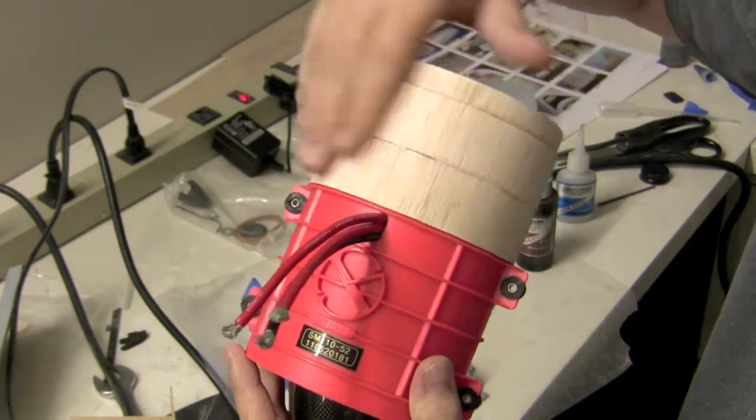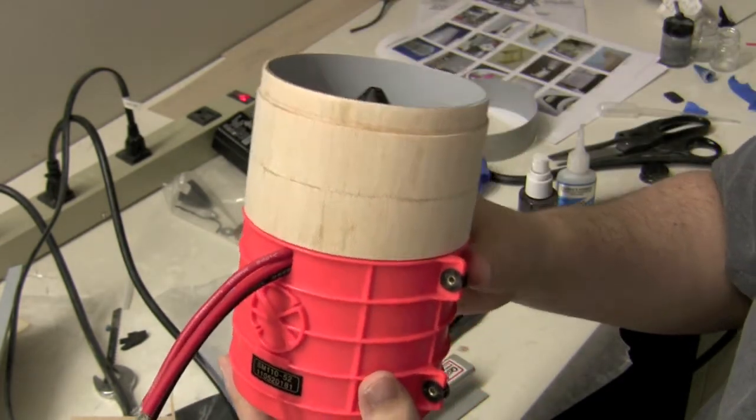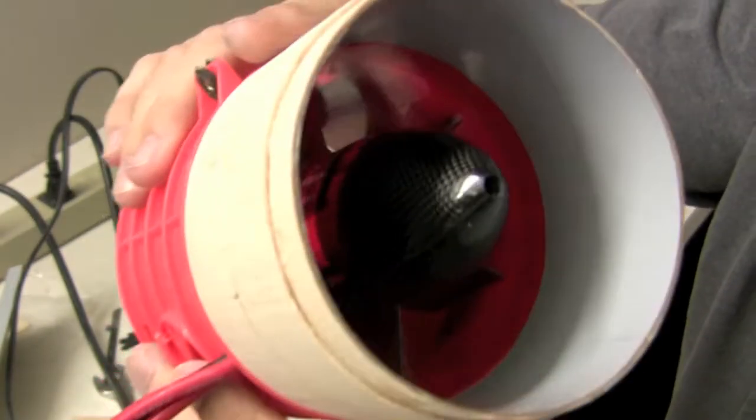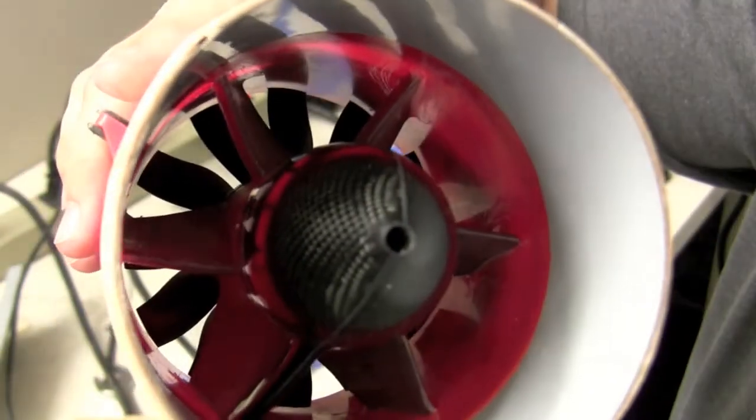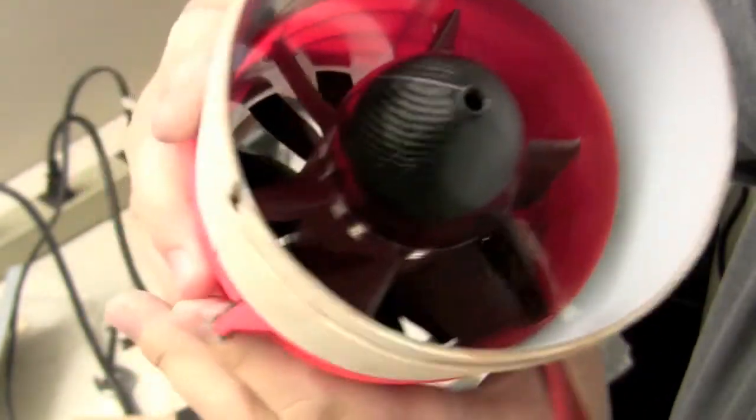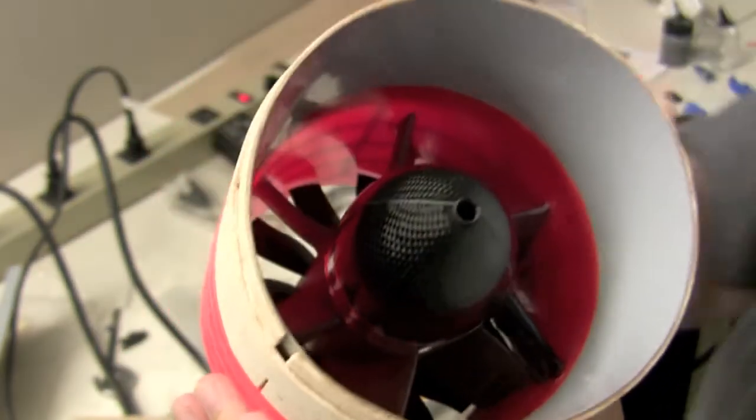I might just add another layer of fiberglass or something around the outside there. But if we can save the weight, probably won't even need to do that. But anyways, again, if you look in there, the transition to the StuMax shroud is pretty much seamless. So I think it turned out really good.